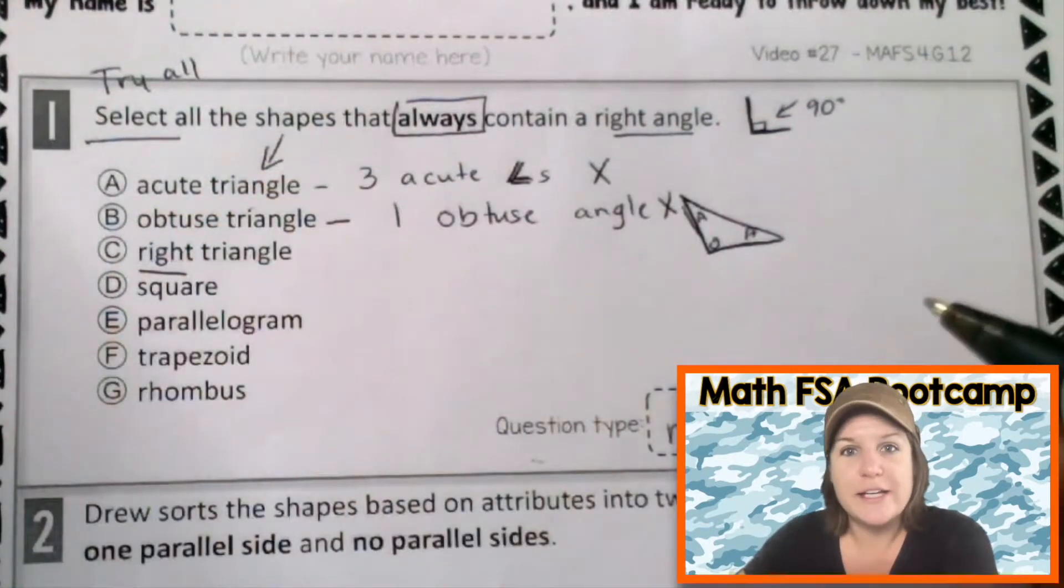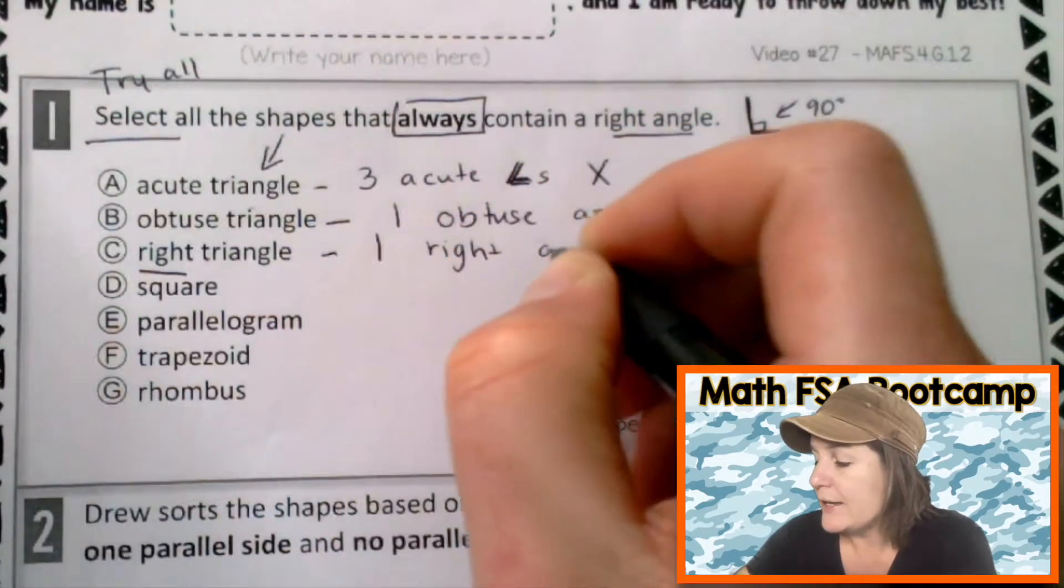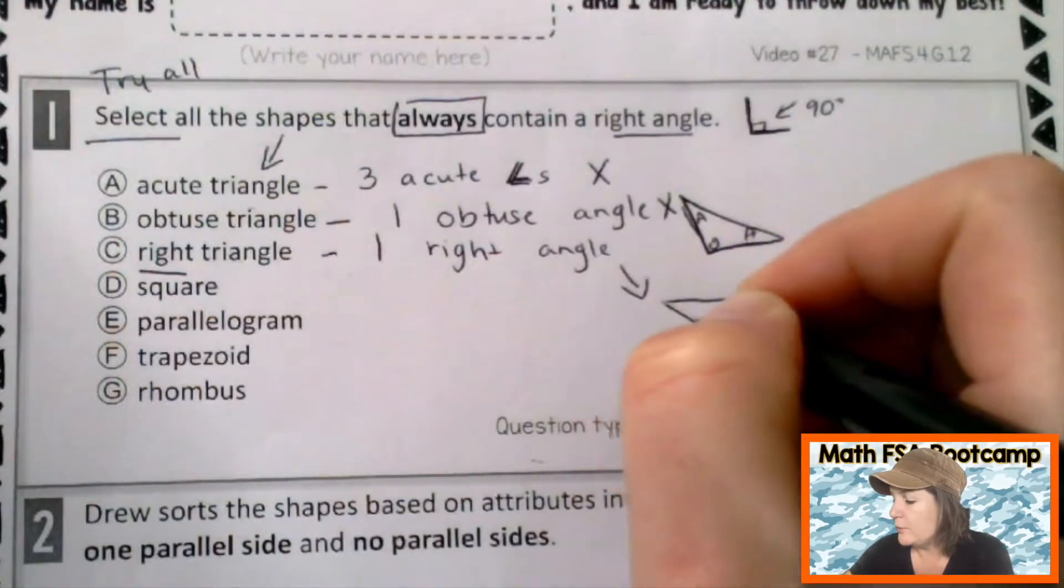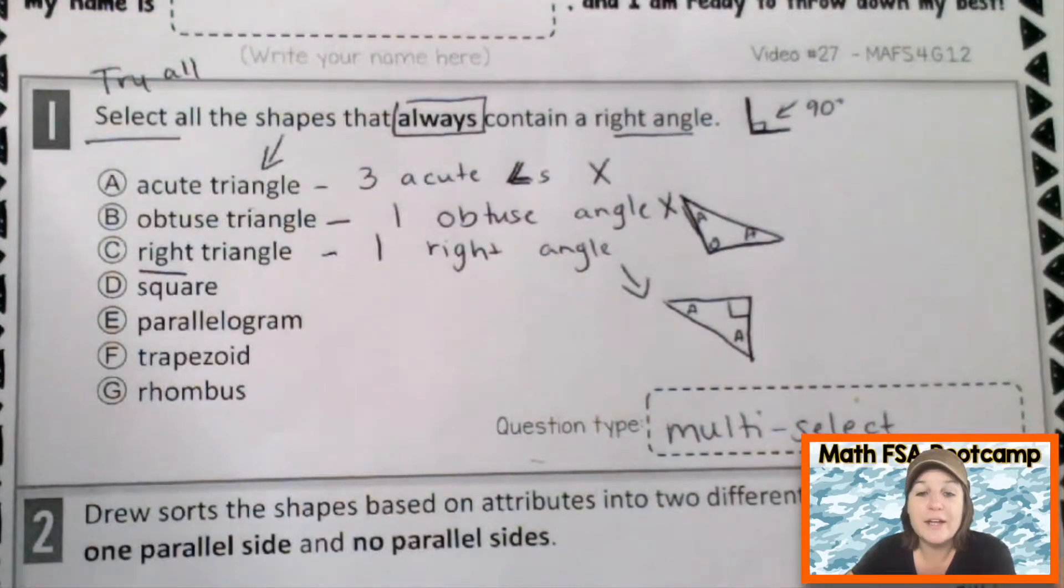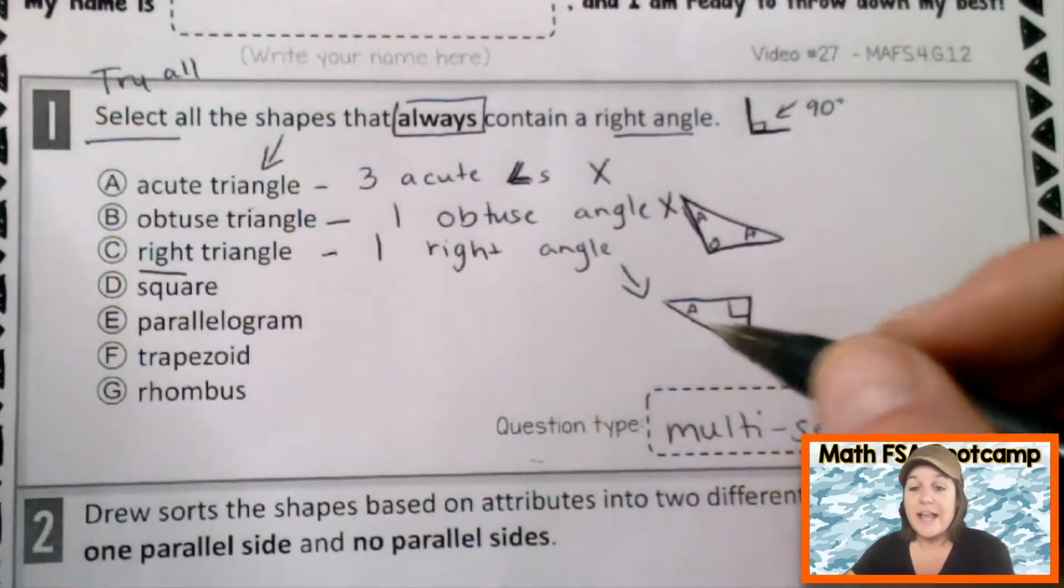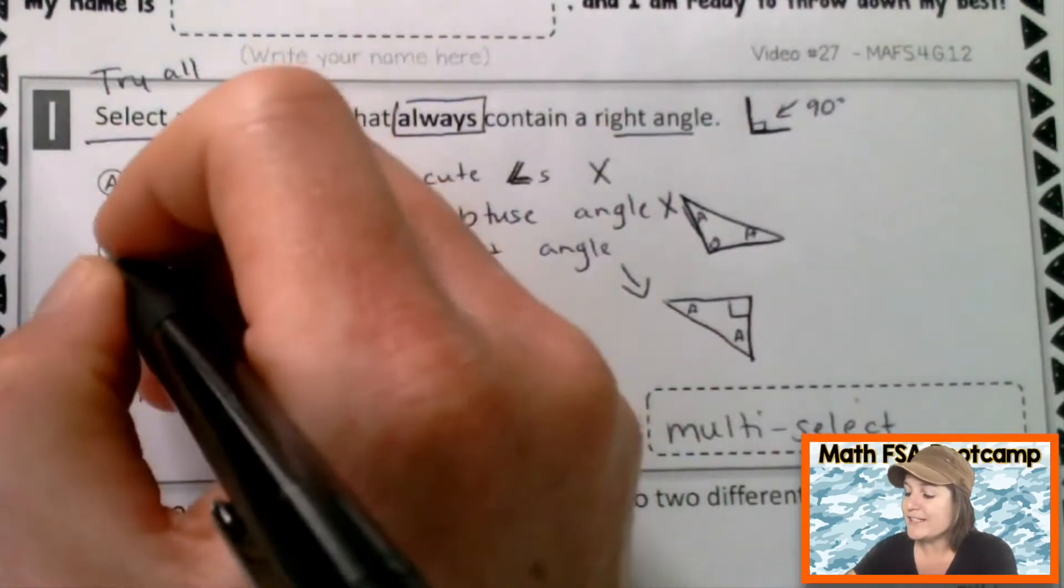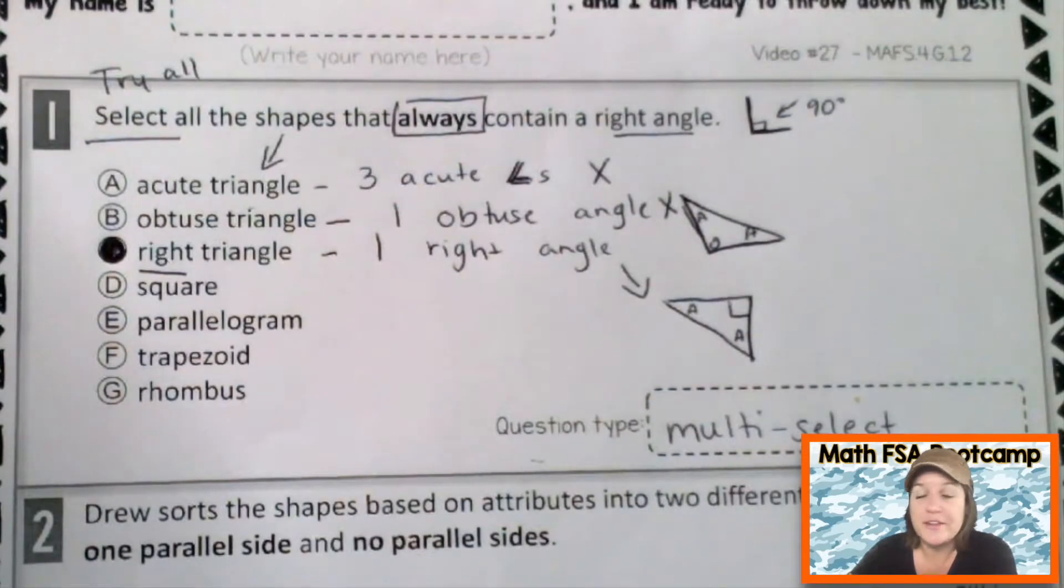A right triangle must have one right angle like this. If this is a right angle, boom. And if there is a right angle, the only other option is to have two other acute angles. But there is a right angle inside of a right triangle. That's why it's called a right triangle. So we can definitely mark C. But we are not finished. No, no, no. We need to make sure that the other ones do too.